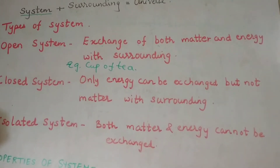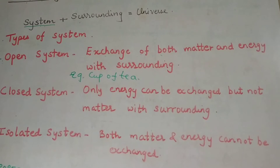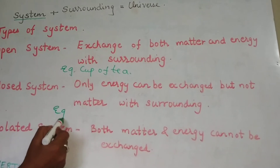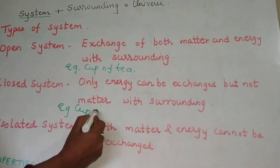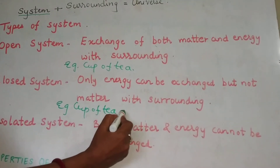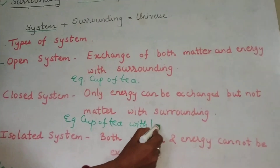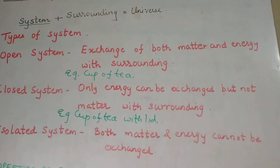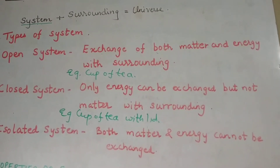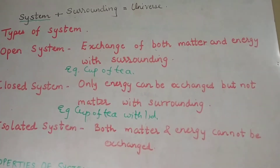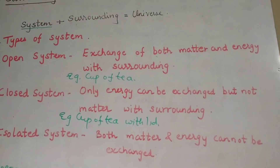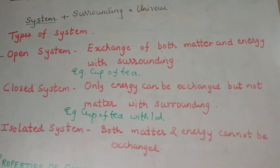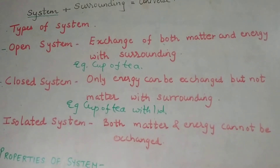Next is the closed system, where only energy can be exchanged but not matter. The same example applies — a cup of tea but closed with a lid or saucer. When the cup is covered, you cannot add anything into it or take anything out. However, the tea will become cold after some time, indicating that energy is exchanged but matter cannot be exchanged because the cup is closed with a lid. This is a closed system.